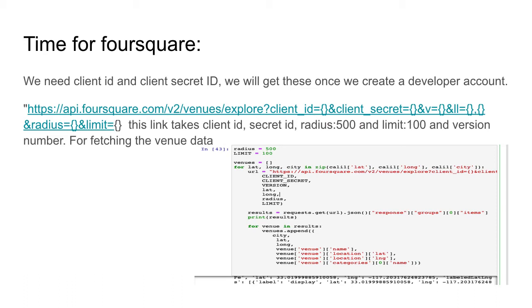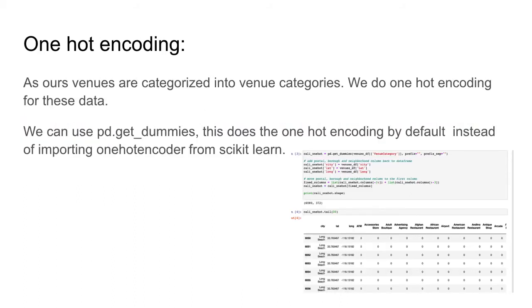For FourSquare we need a client ID and client secret ID, obtained by logging into a developer account. Note that the FourSquare API gives only a limited number of calls per day or per month for a free login account. In the API call, client ID takes the client ID, client secret takes the secret ID, v takes the version number, l and l denote latitude and longitude, and radius and limit are set accordingly.